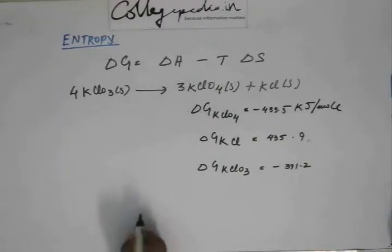Alternatively, someone can also ask, someone may not give you the data of delta G. They may give you the data of delta H and they may give you the data of delta S, and they may ask you to calculate the delta G.